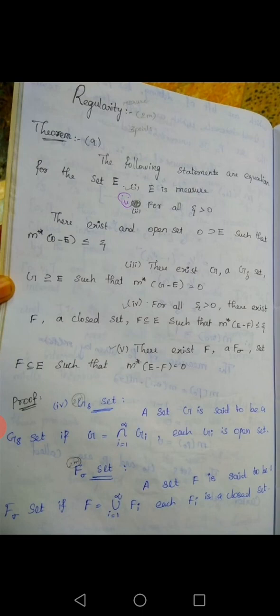Third: there exists a G-delta set G containing E such that M-star of G minus E equals zero. Fourth: for all epsilon greater than zero, there exists a closed set F, with F subset of E, such that M-star of E minus F is less than or equal to epsilon.